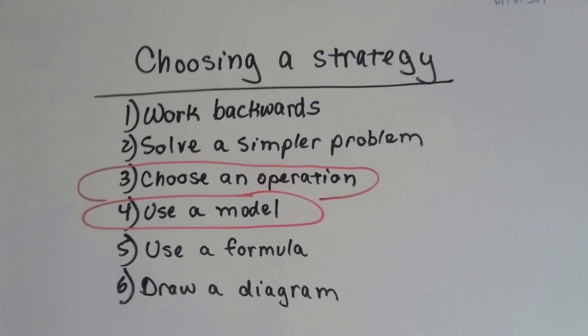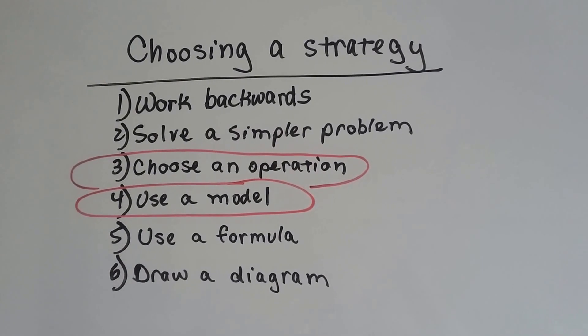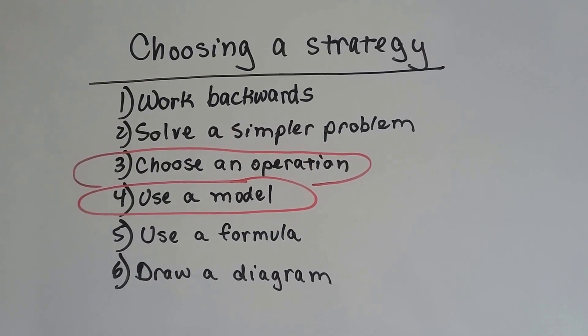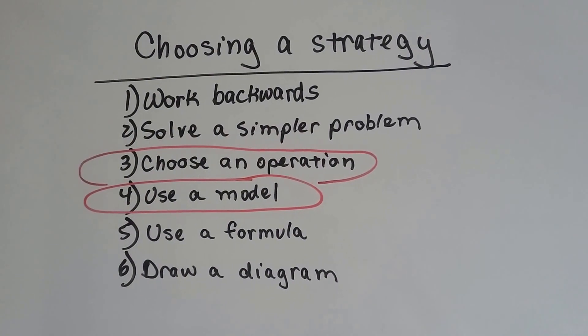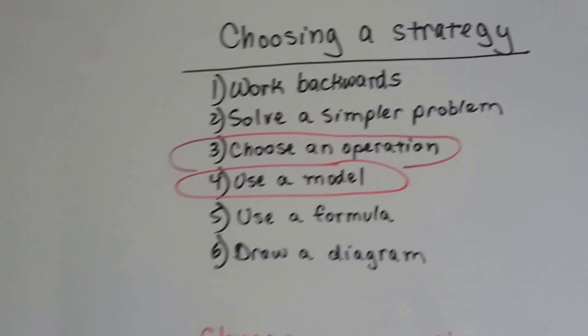We're also going to do Choose an Operation. You know that when we do word problems, we have to choose a strategy. We can work backwards, solve a simpler problem, choose an operation, or use a model. We could also use a formula or draw a diagram. So we're going to do Choose an Operation and Use a Model in this one.